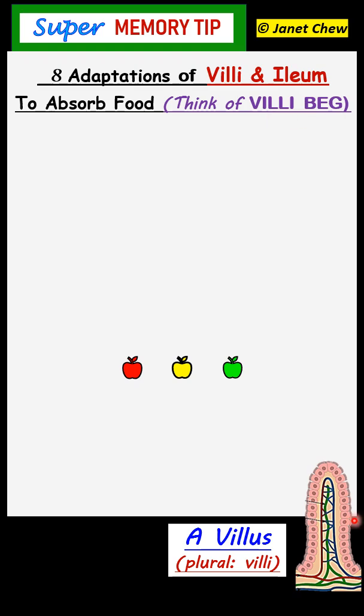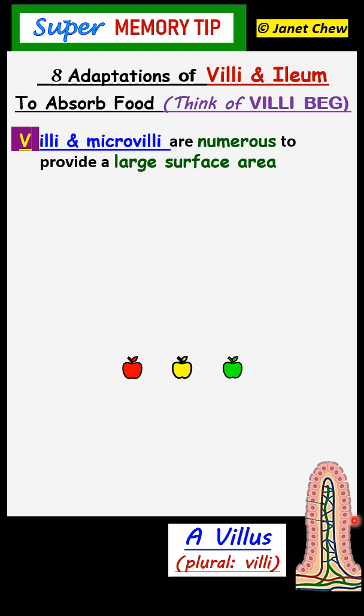What is in Vili bag? The V stands for the Vili and micro Vili, which are numerous to provide large surface area for faster nutrient absorption in the Helium. Vili are tiny projections in the Helium, and on top of the Vili in the epithelial cells there are micro Vili, which are also tiny projections. All these increase the surface area for faster nutrient absorption.